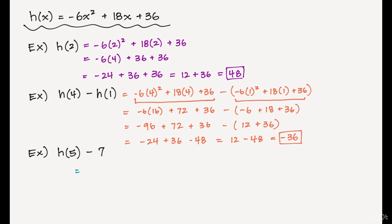Final one. Let's find the function when I plug in 5 and then subtract 7 at the end. So negative 6 times 5 squared plus 18 times 5 plus 36 minus 7. Here we go. Negative 6 times 25 plus 90 plus 36 minus 7. That leaves me with negative 150 plus 90 plus 36 minus 7. And when I add all those integers together, my final answer is going to be negative 31. And I'm done.